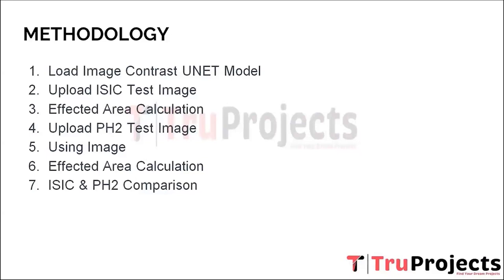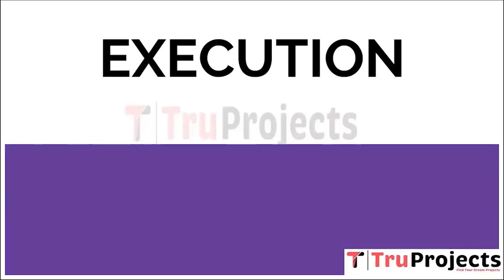The seventh step is ISIC and PH2 comparison. We compare the segmentation results and affected area calculations between the ISIC and PH2 test images. This comparison evaluates the model's performance across different datasets, assessing its generalization capabilities and robustness, and helps identify potential variations or challenges in different scenarios. Now coming to the execution part — first we need to open the code folder.